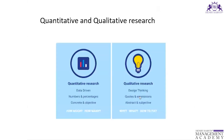In quantitative research, it is data-driven and gives you a lot of numbers and percentages — for example, how many male users, how many female users, what percentage of people are opting for a cafeteria. Qualitative research talks about expressions; for example, if a customer is not happy with the payment gateway, they may vent out their feelings.